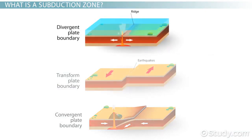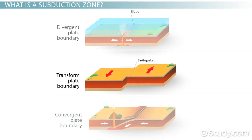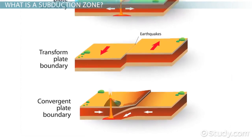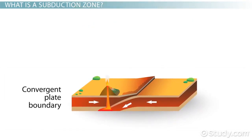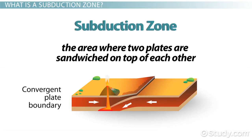divergent boundaries, where plates move apart; and transform boundaries, where plates slide alongside each other. A subduction zone is something that happens only with convergent boundaries. Subduction is where, after colliding, one plate sinks below the other, and a subduction zone is the area where two plates are sandwiched on top of each other — like a tectonic BLT.